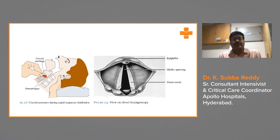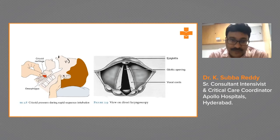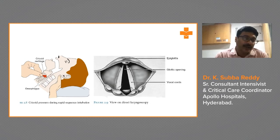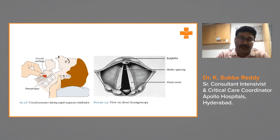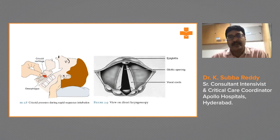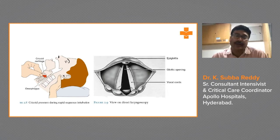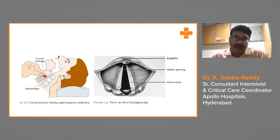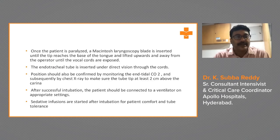If the patient has a full stomach, we apply cricoid pressure — approximately 30 centimeters of water pressure — and then proceed with intubation without giving bag-mask ventilation. This is called rapid sequence intubation. We give an induction agent like thiopentone and a rapidly-acting muscle relaxant — either succinylcholine, atracurium, or rocuronium. You pre-oxygenate but do not ventilate the patient, and you apply cricoid pressure to prevent aspiration of gastric contents.